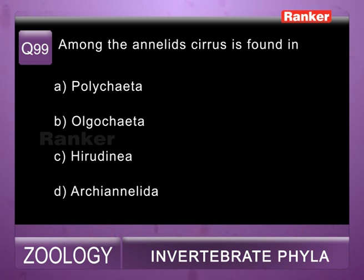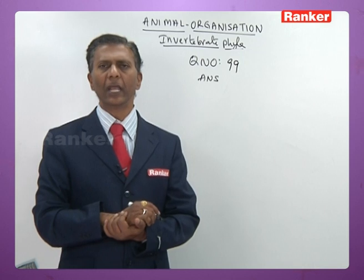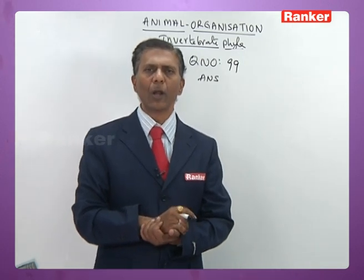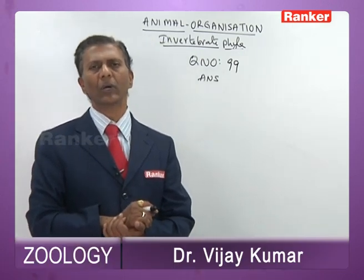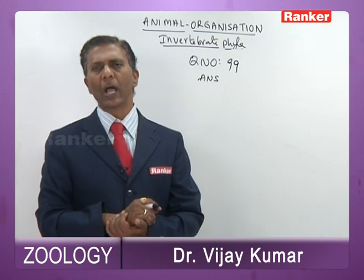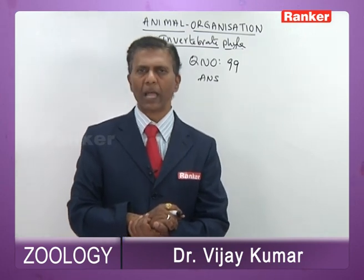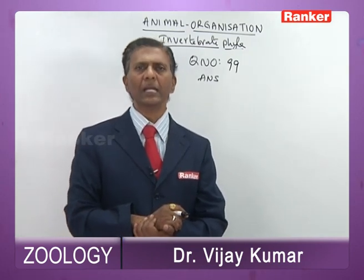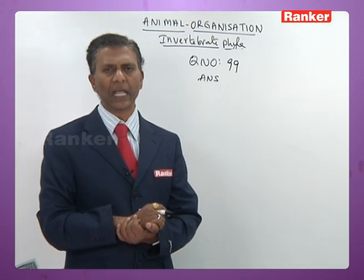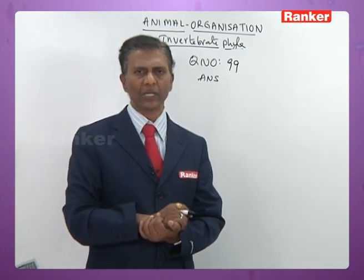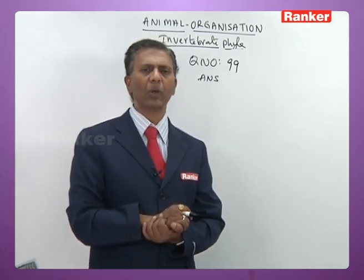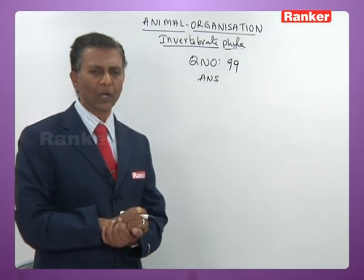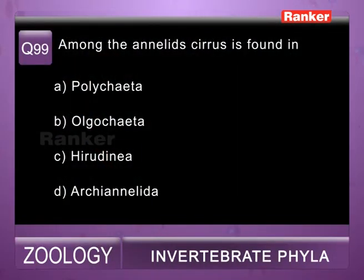Question ninety-nine: among annelids, cirrus is found in — a) Polychaeta, b) Oligochaeta, c) Hirudinea, d) Archiannelida. In Hirudinarians they have an intermittent organ called cirrus, with which they ensure hypodermic insemination — injecting sperms below the skin of each other during breeding. So ninety-ninth question correct answer is c) Hirudineans.